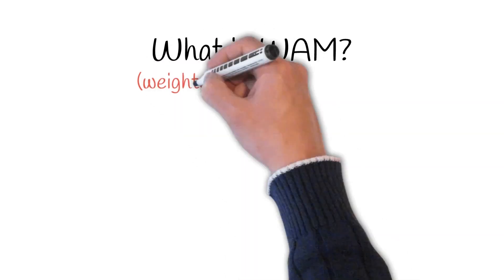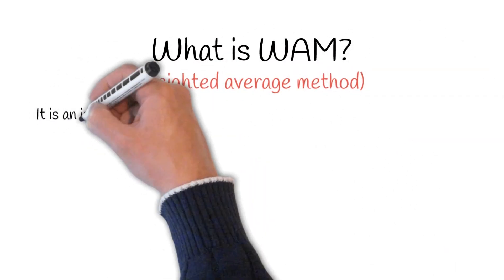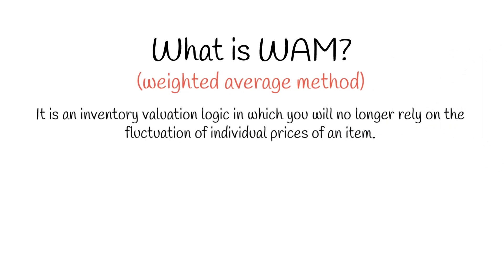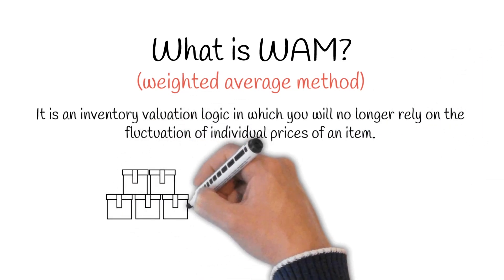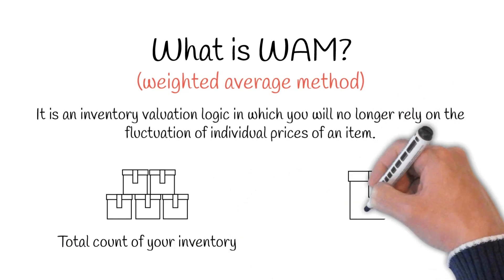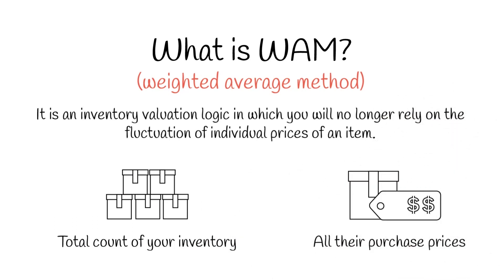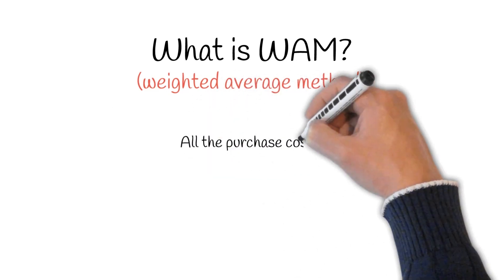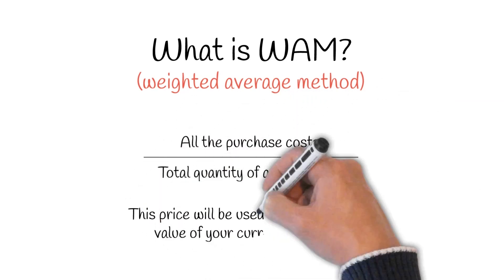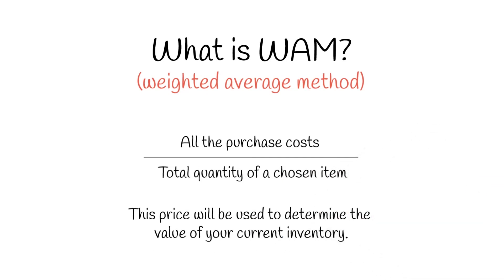The weighted average method, or WAM, is an inventory valuation logic in which you will no longer rely on the fluctuation of individual prices of an item. Instead, you will take the total count of your inventory along with all their purchase prices, and arrive at what is known as a weighted average price. This is done by adding all the purchase costs and dividing them by the total quantity of a chosen item. This price will be used to determine the value of your current inventory.